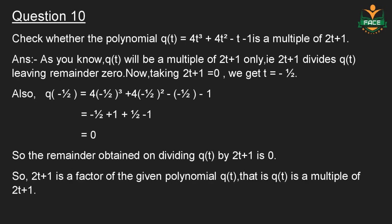Question number 10: Check whether the polynomial Q(t) is equal to 4t cubed plus 4t squared minus t minus 1 is a multiple of 2t plus 1. Q(t) will be a multiple of 2t plus 1 only if 2t plus 1 divides Q(t) leaving remainder 0. Taking 2t plus 1 equal to 0, we get t equal to minus 1 by 2. Q(minus 1 by 2) is equal to 4 into (minus 1 by 2) cubed plus 4 into (minus 1 by 2) squared minus (minus 1 by 2) minus 1, which equals 0. So the remainder on dividing Q(t) by 2t plus 1 is 0, therefore 2t plus 1 is a factor of Q(t), meaning Q(t) is a multiple of 2t plus 1.